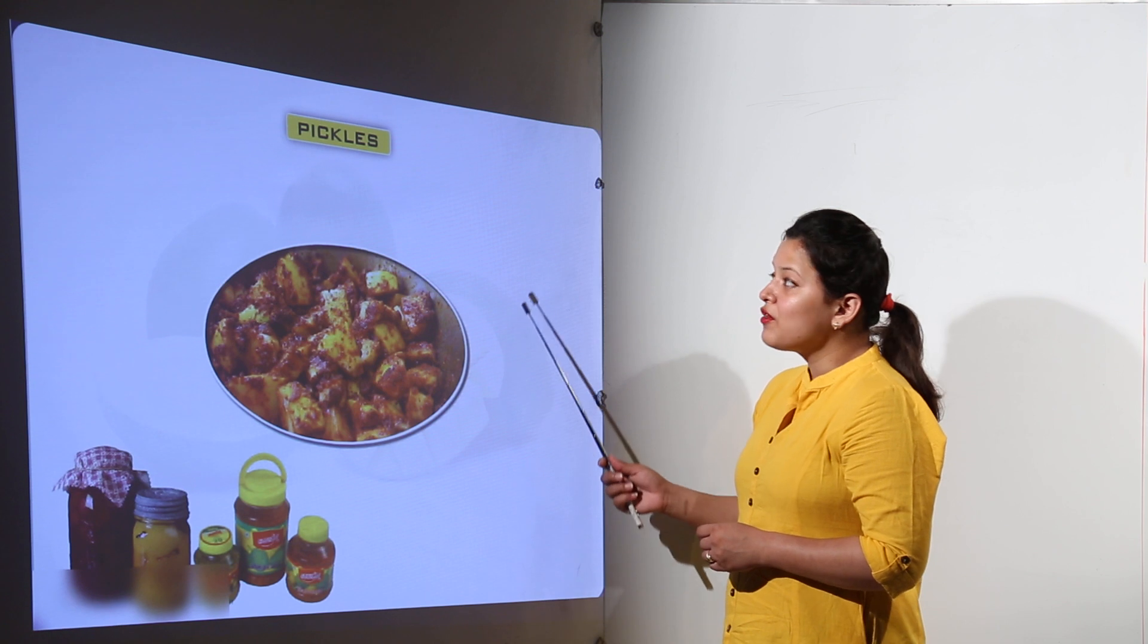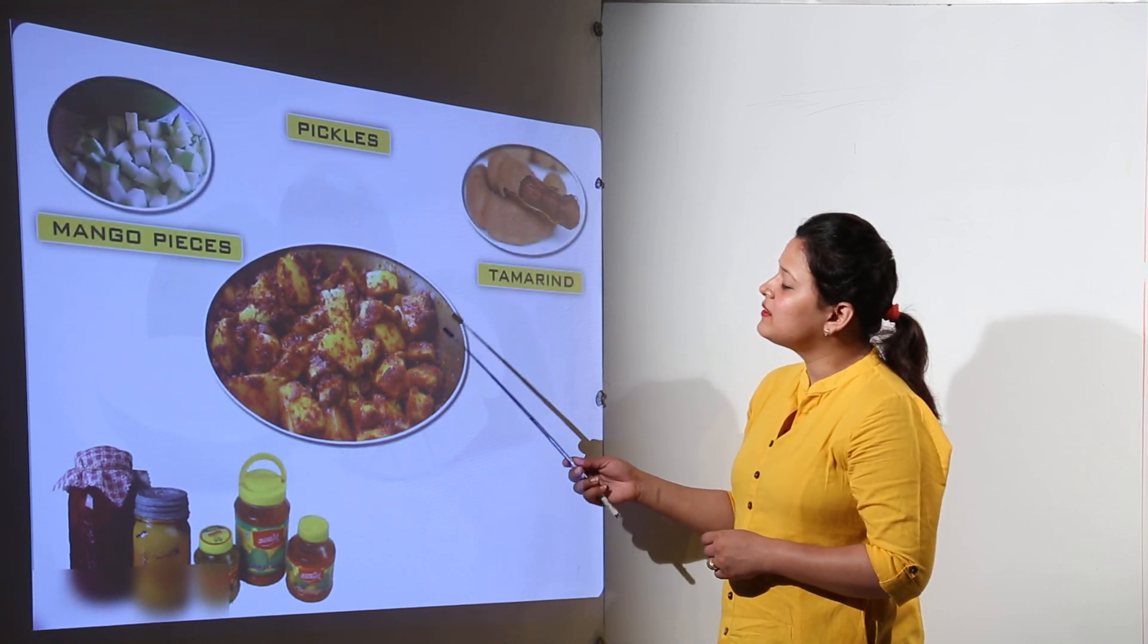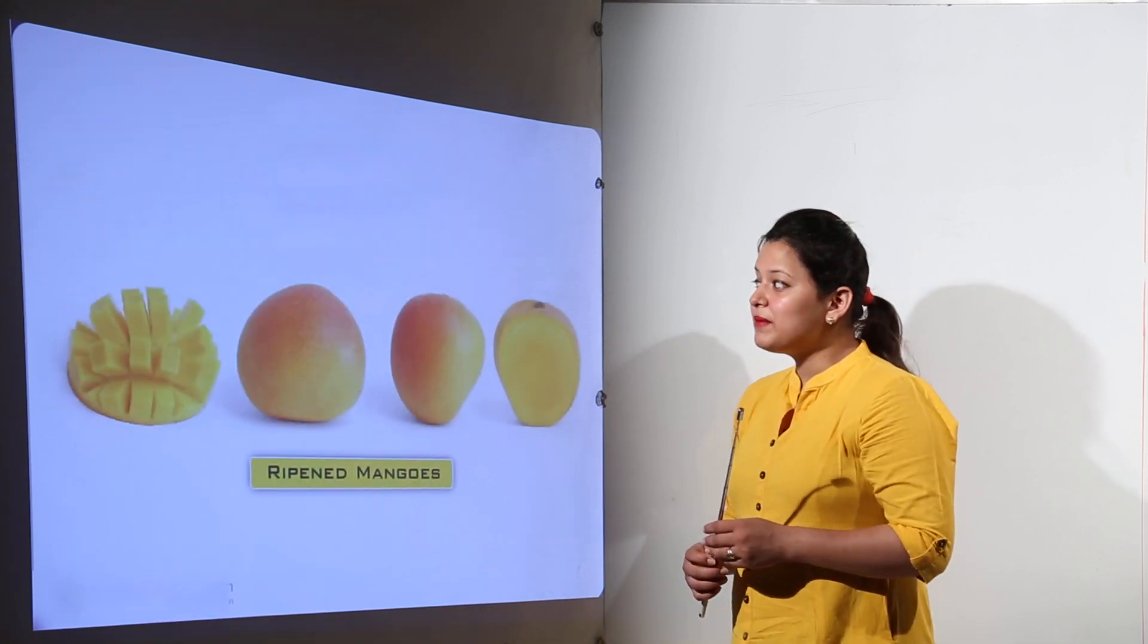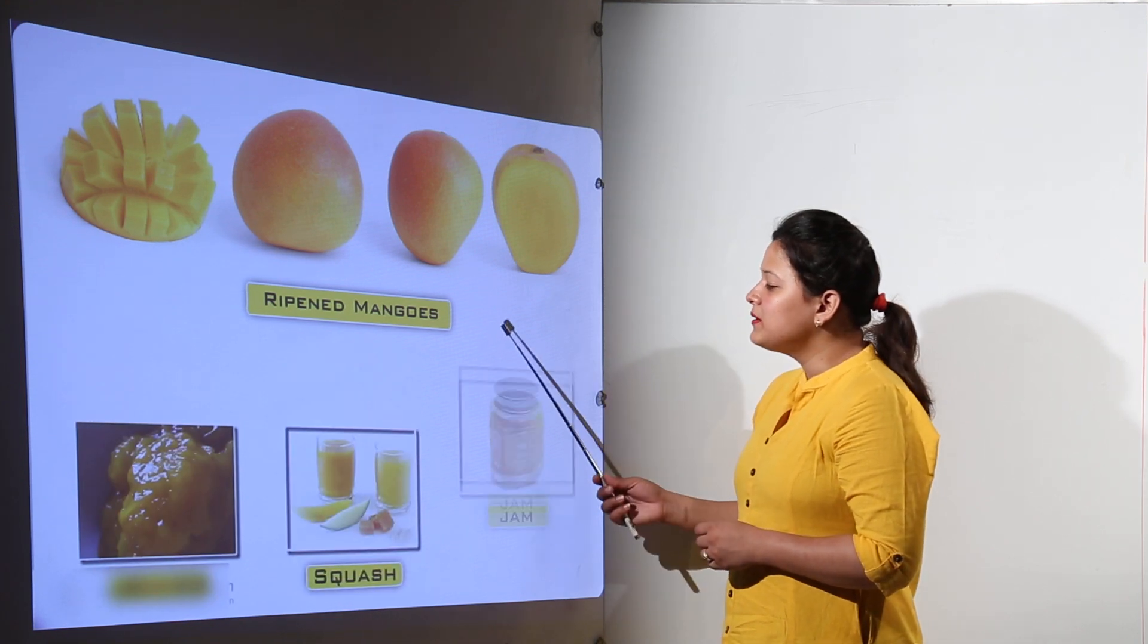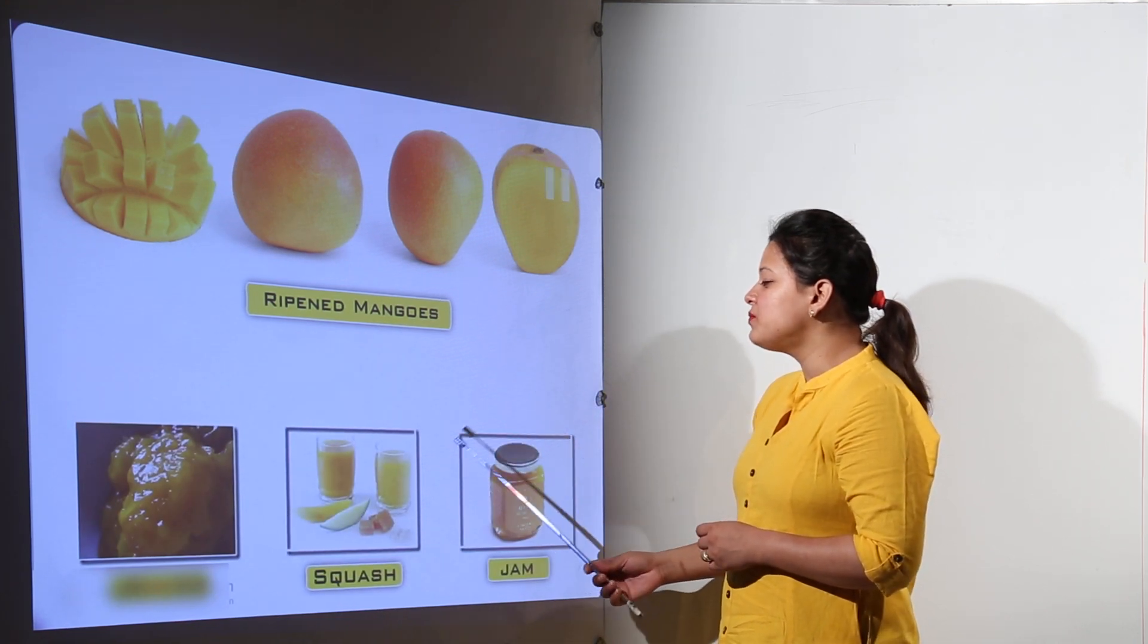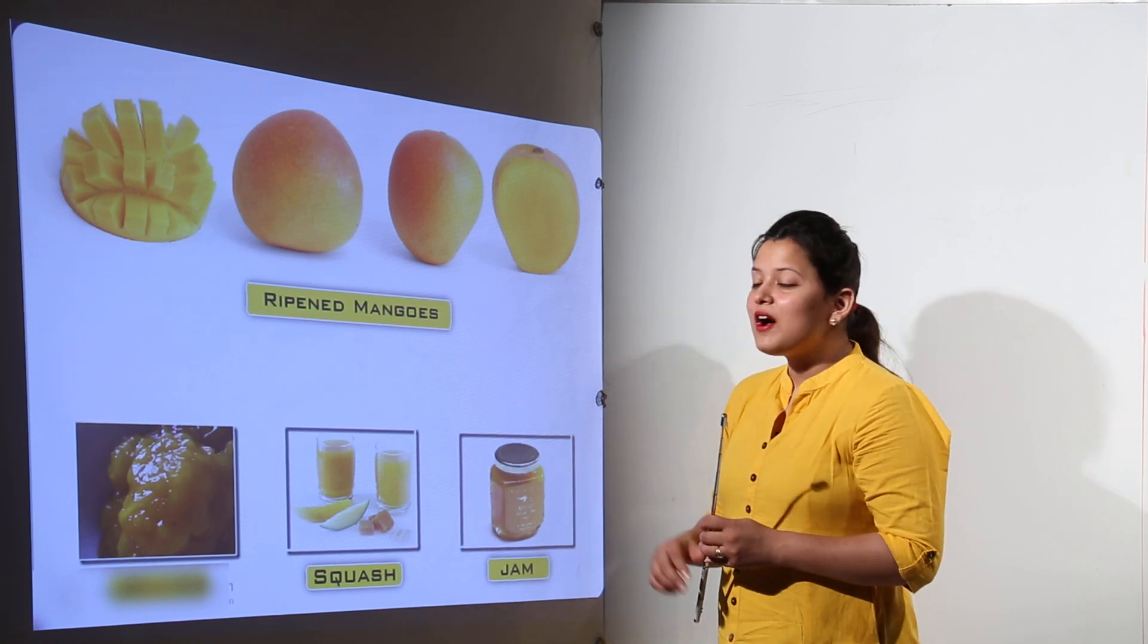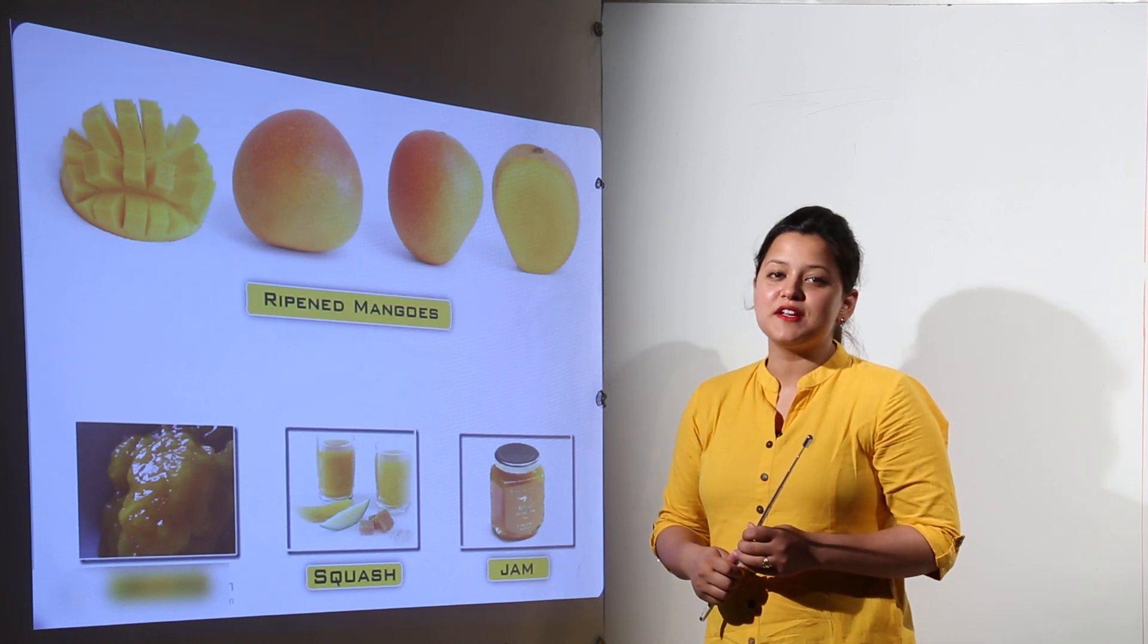So we have the unripe mangoes from which the pickles are made. So the pickles are made along with the mango pieces, the tamarind and some salt. So that makes the pickles and they don't really get damaged. Ripened mangoes can be used to form so many different things again like the squashes, the jams and jellies. But do you know how they are preserved? Again using some preservatives like sugar and jaggery.